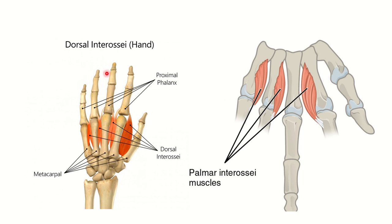In the first picture we can see the dorsal interossei muscles — counting: one, two, three, four — meaning the dorsal interossei muscles of the hand are four in number. On the other hand, we can see the palmar interossei muscles — one, two, three — meaning the palmar interossei are three in number. So this count is very important: dorsal interossei are four, and palmar interossei are three.